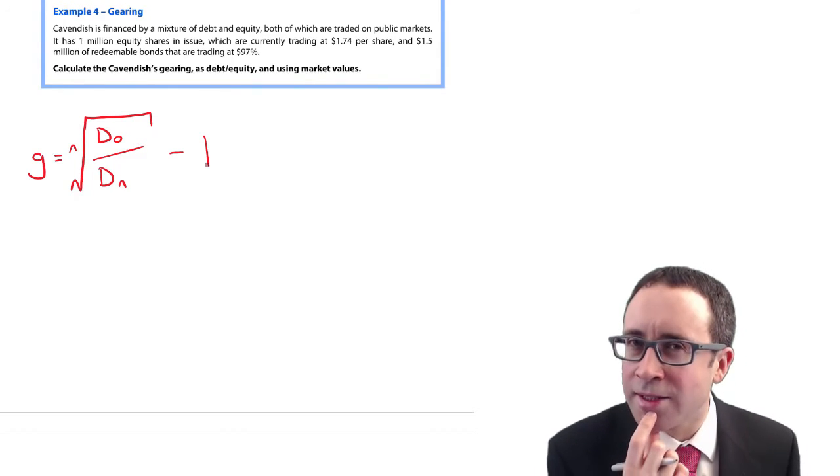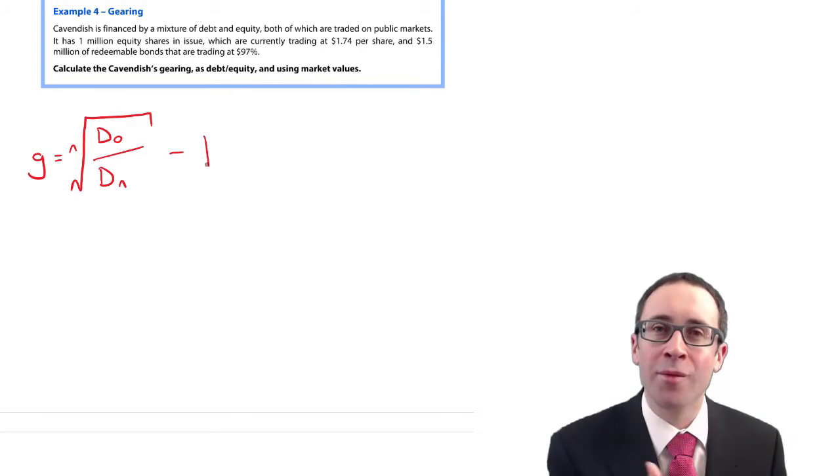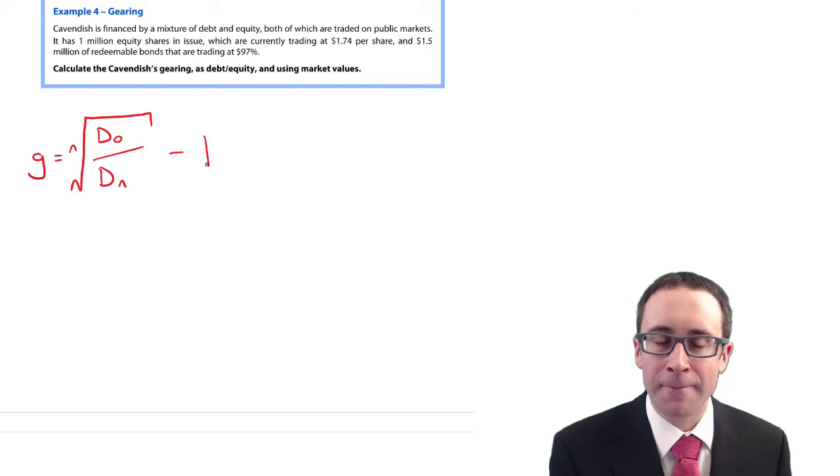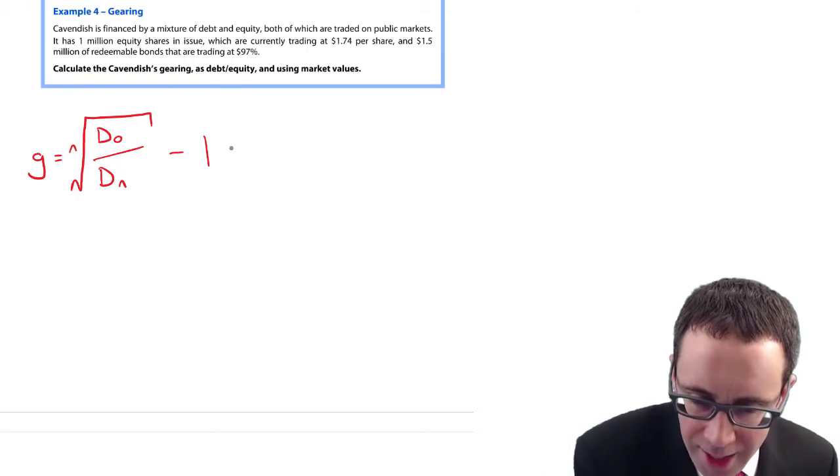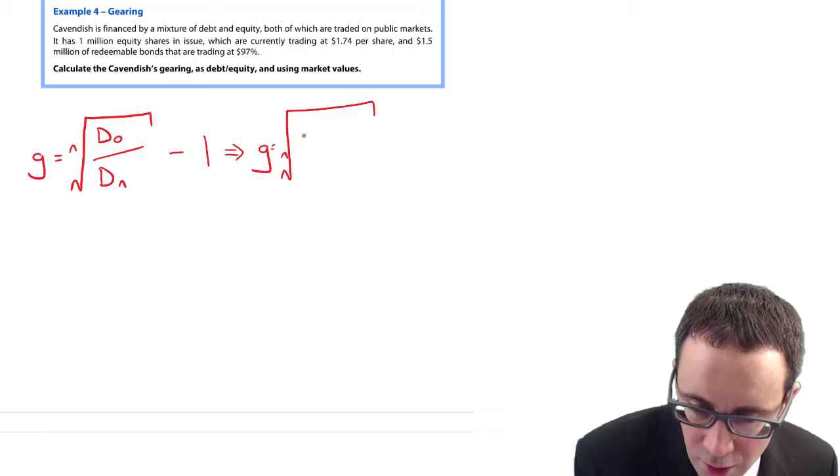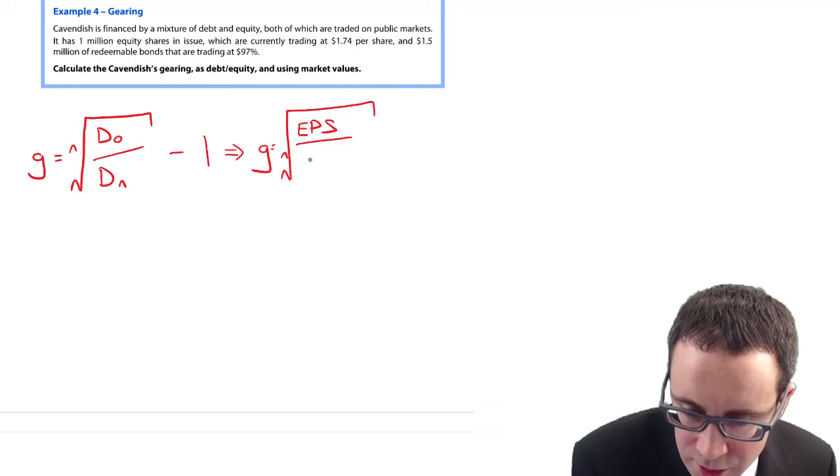Does that sound familiar? That was the formula we used to work out the historic growth in your dividends. Now we're looking at the historic growth in your earnings per share.